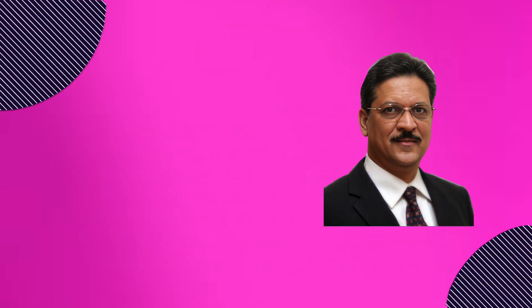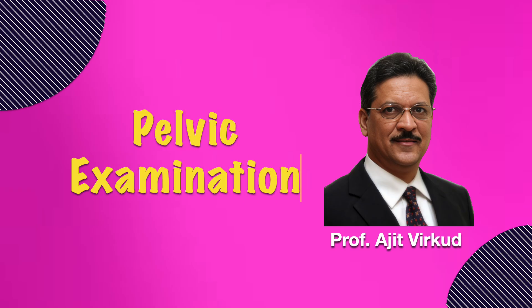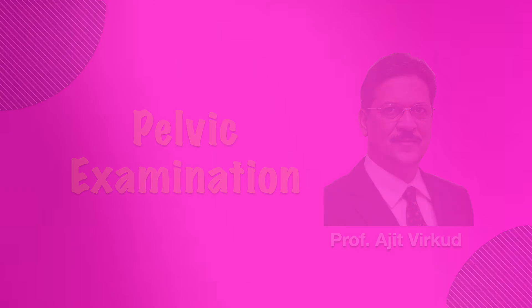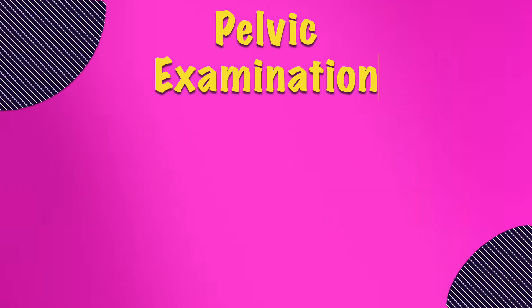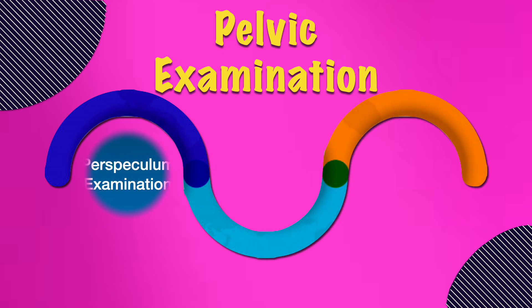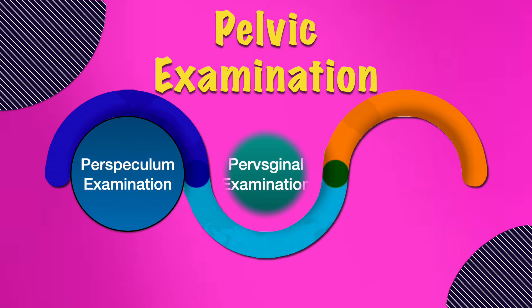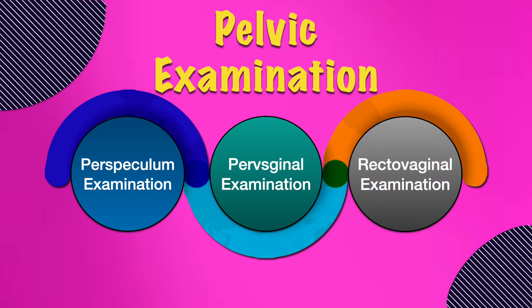This is the inaugural installment of my clinical skills playlist in obstetrics and gynecology, where I will delve into the intricacies of pelvic examination with a particular focus on per speculum examination. Pelvic examination encompasses three components: per speculum examination, which I will elaborate upon today, per vaginal examination, and recto-vaginal examination conducted when specific gynecological conditions are suspected. For further information on per vaginal examination, please refer to the link in the description box below.